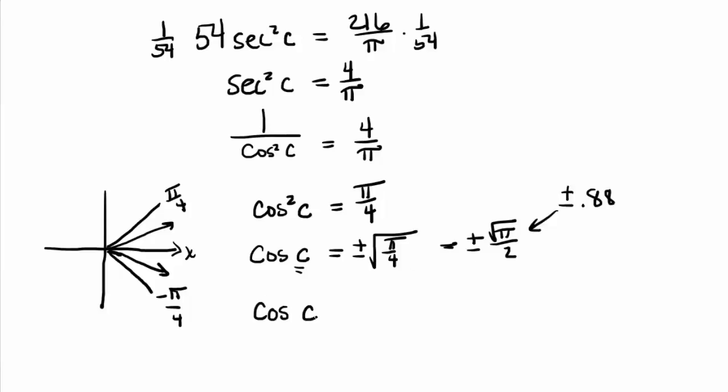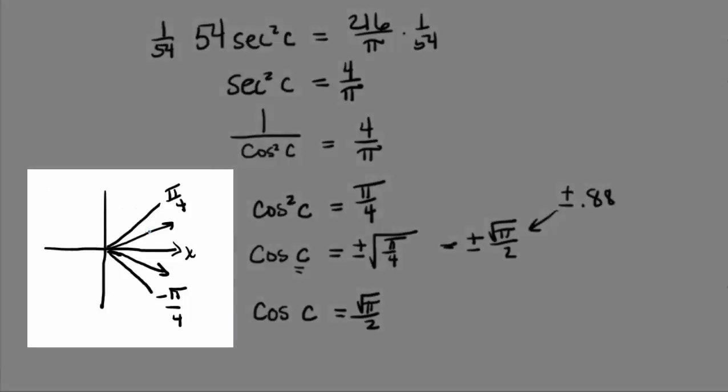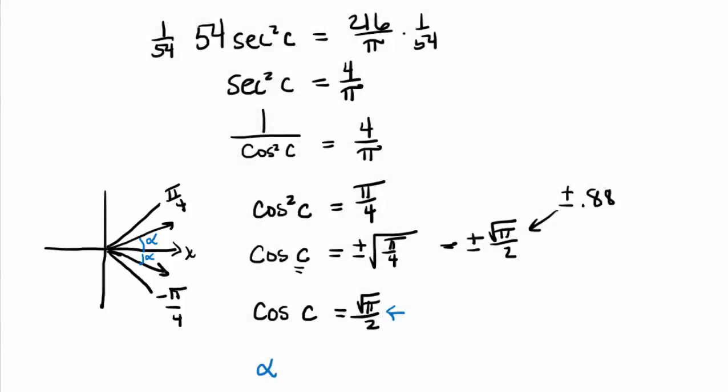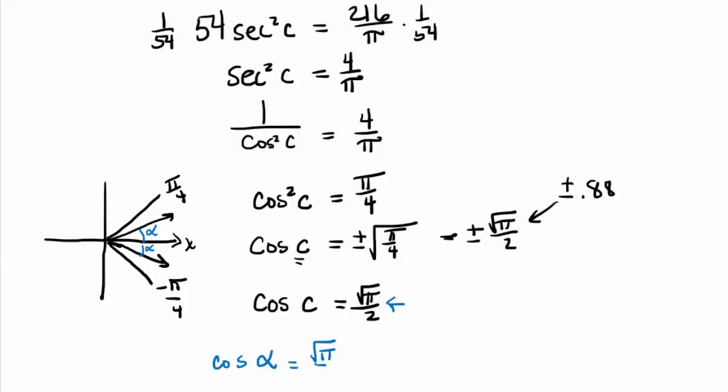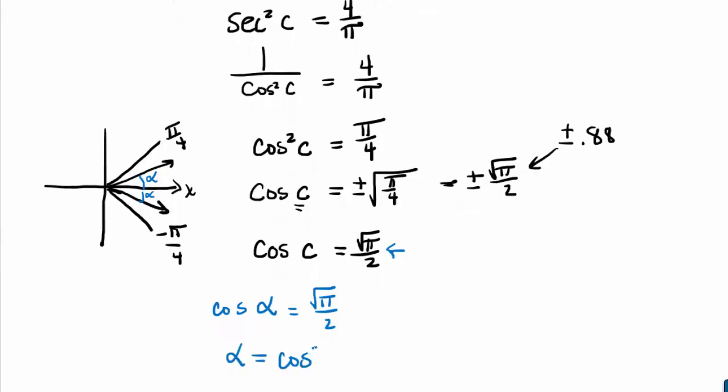So we're looking for an angle c such that the cosine of c is equal to the square root of pi over 2. So let's suppose that either one of these little terminal sides represents our angle c. Either way, they're going to have to have the same reference angle in order to give this result. We're looking for some reference angle alpha such that the cosine of alpha is equal to the square root of pi over 2. That would mean that alpha is the inverse cosine of square root of pi over 2.